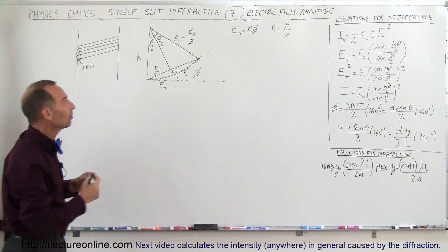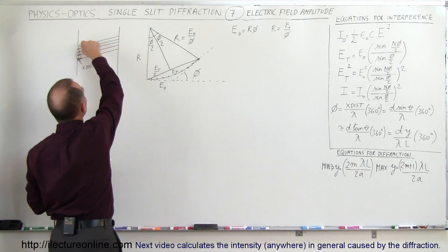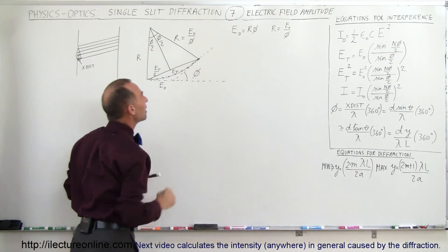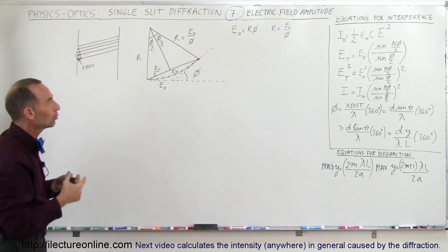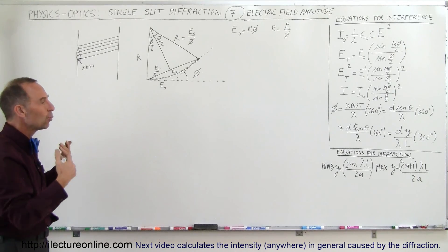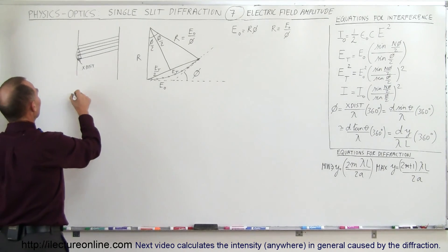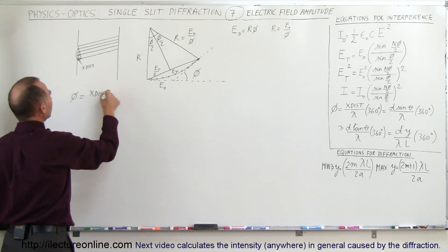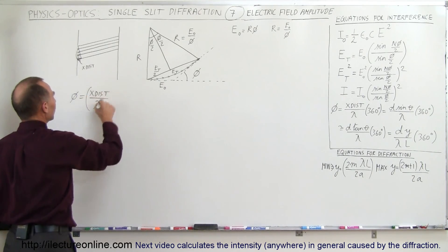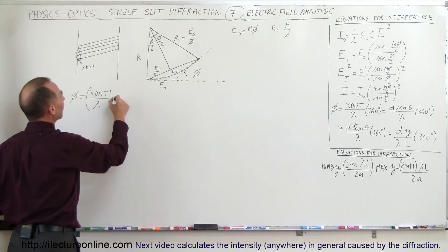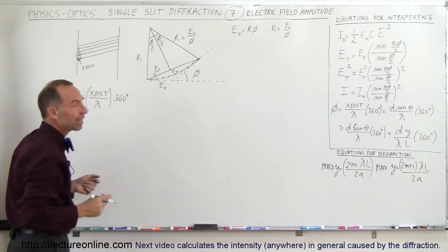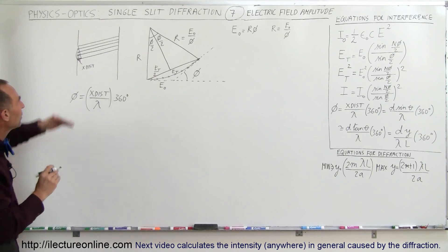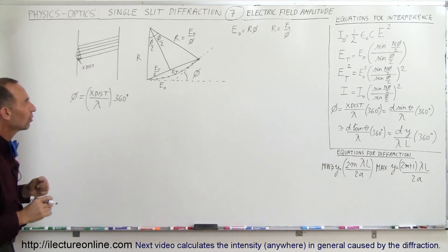The phase difference between the first portion of the beam at the top and the last portion of the beam at the bottom is equal to phi. Phi is equal to the fraction of the wavelength — the extra distance traveled divided by the wavelength — times 360 degrees or times 2 pi. That's what we mean by the phase angle between the top and the bottom of the beam.